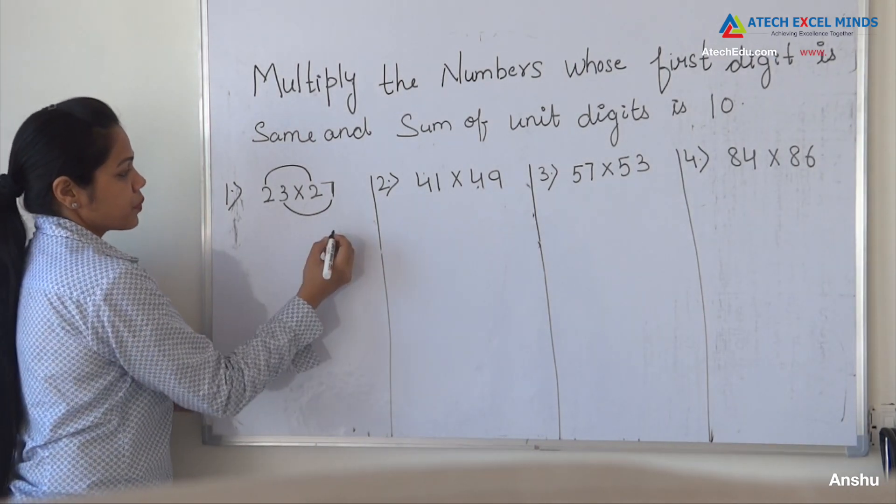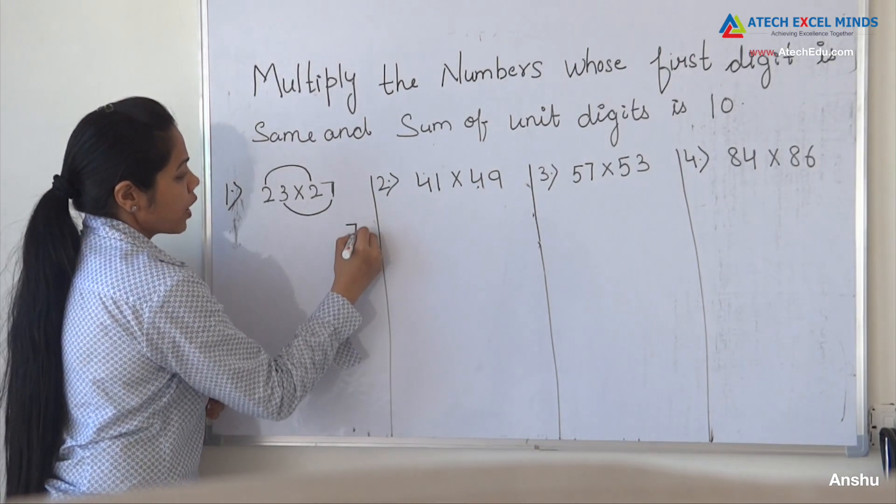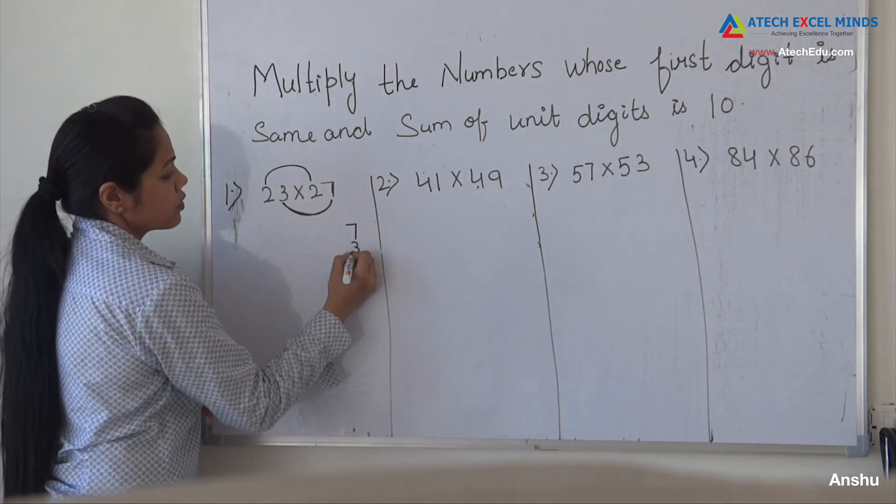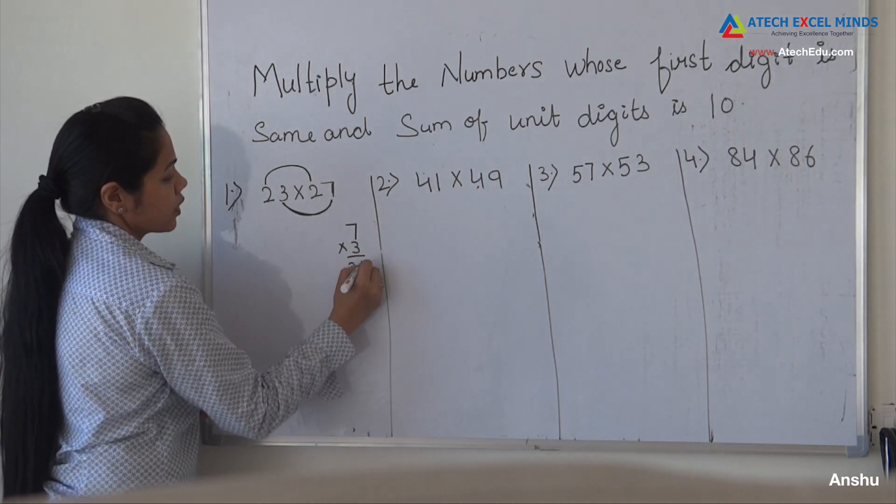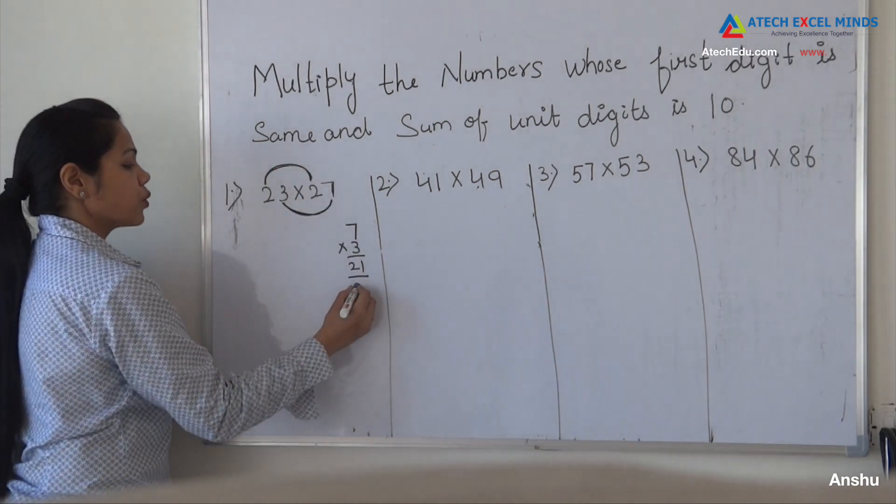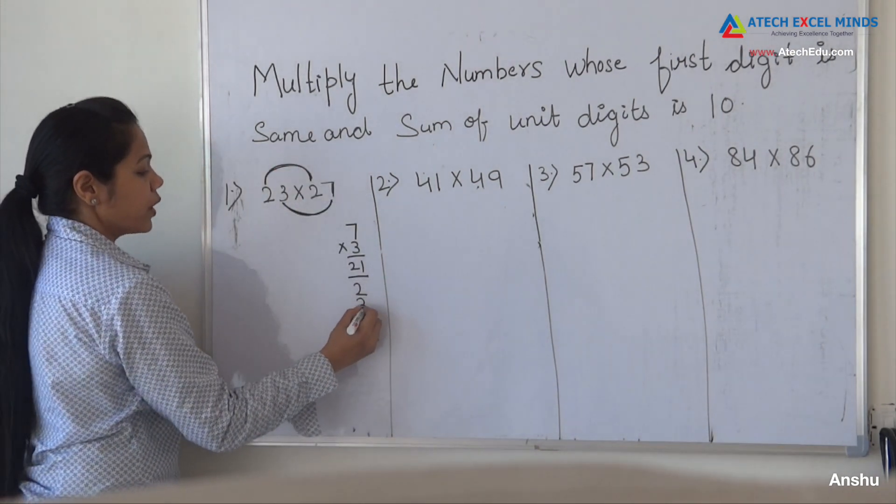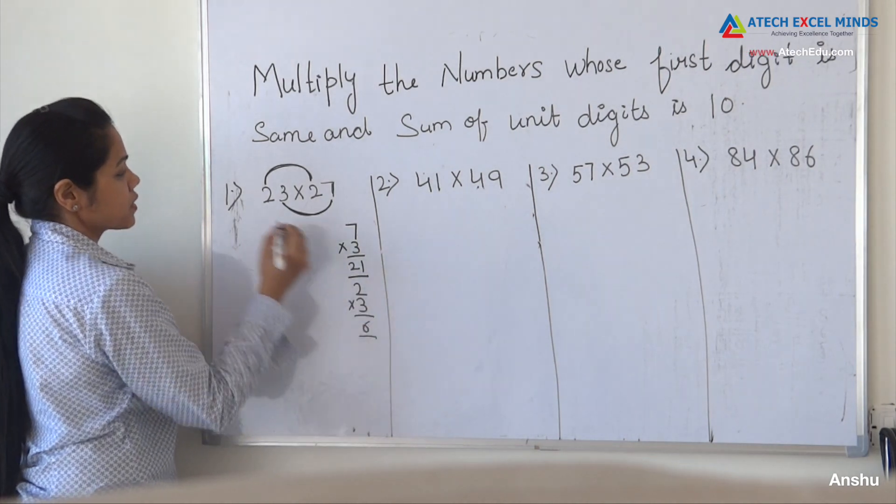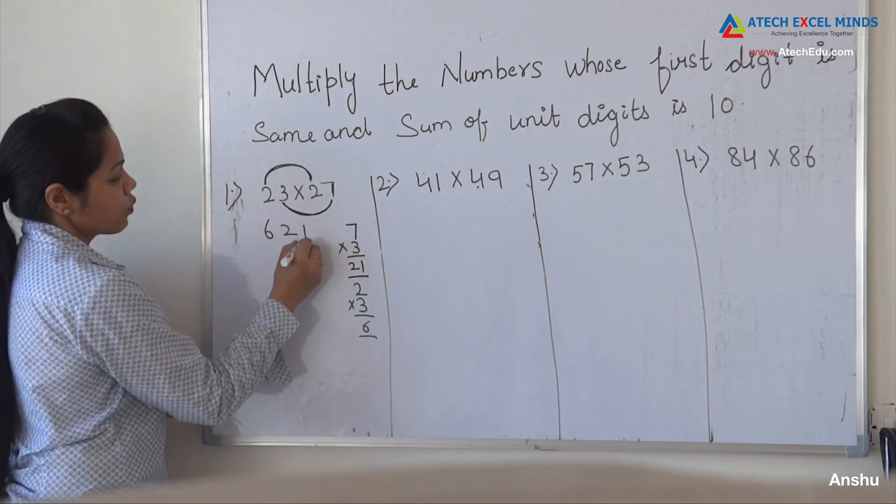So what will be the procedure? First, multiply the unit digits: 7 times 3 is 21. And what is the first digit? It is 2. What is the next number? It is 3. So multiply it, you will get 6. Write here 6, 2, 1.